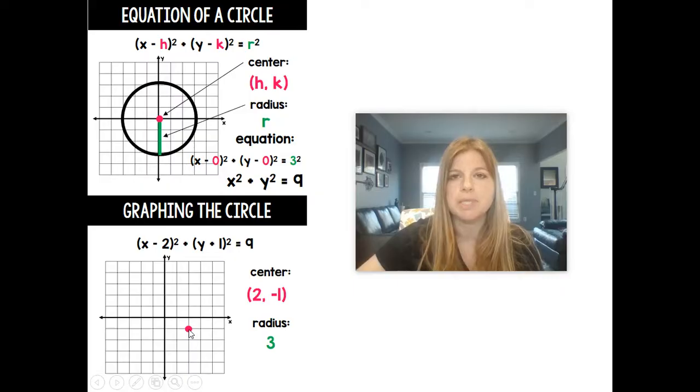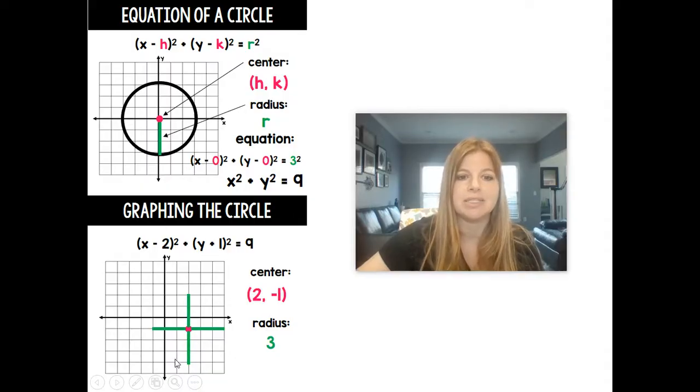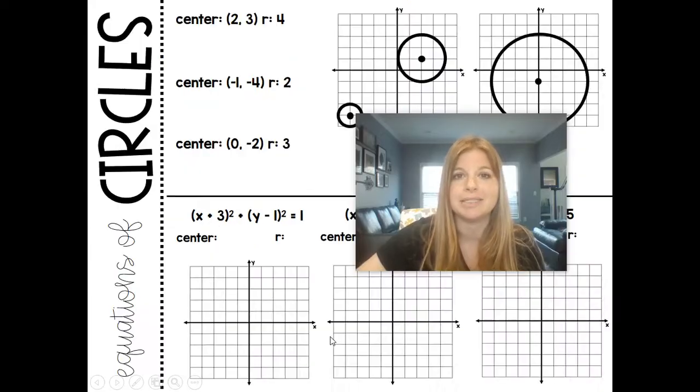So that means from this center, if I went out 3 units in all 4 directions, north, south, east, and west, and then I connected those in one smooth curve, I would be able to graph my circle pretty easily.